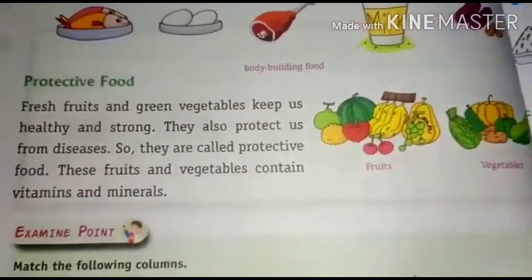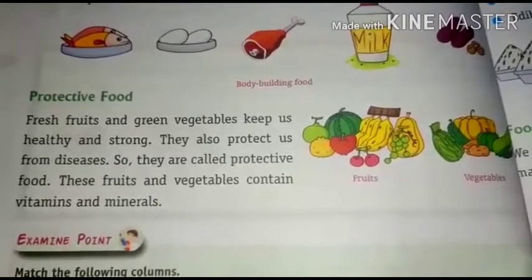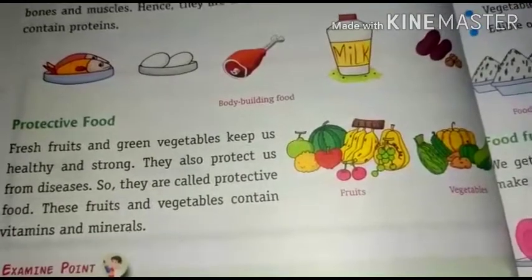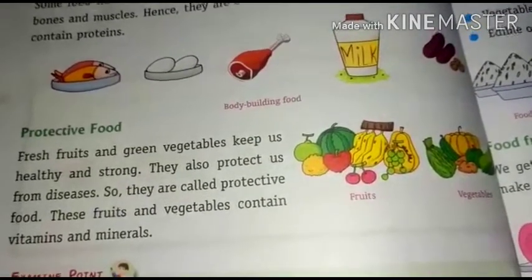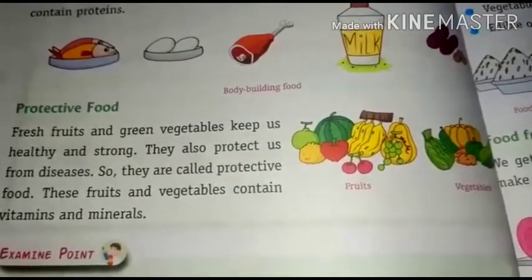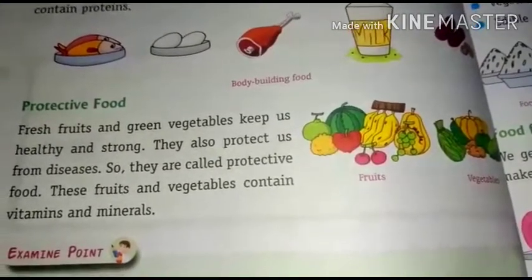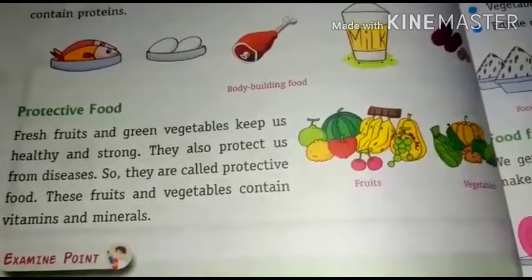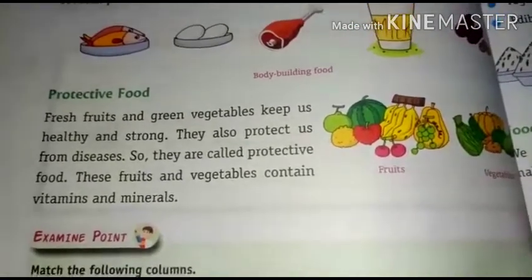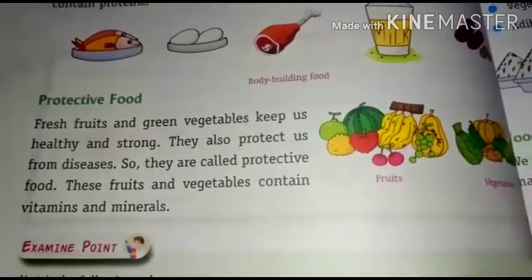Protective food: fresh fruits and green vegetables keep us healthy and strong. Our protective food is fresh fruits and green vegetables, which keep us healthy and strong. They also protect us from diseases, which is why they are called protective food. These fruits and vegetables contain vitamins and minerals.